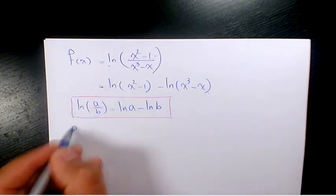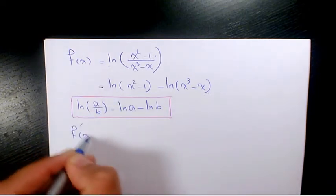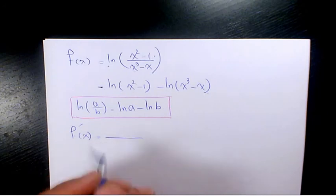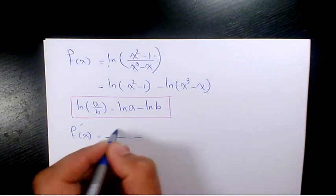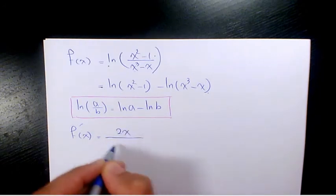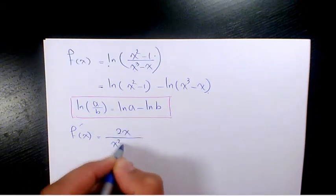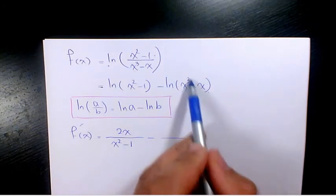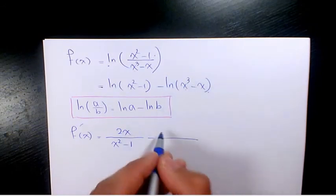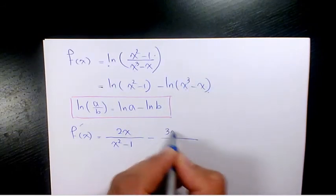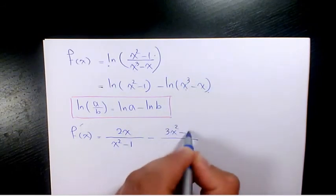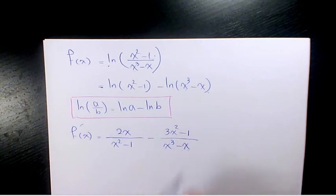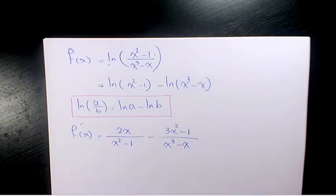Then when you find the derivative, it's going to be: the derivative of x squared minus 1, which is 2x, over x squared minus 1, minus the derivative of x cubed minus x, which is 3x squared minus 1, over x cubed minus x.